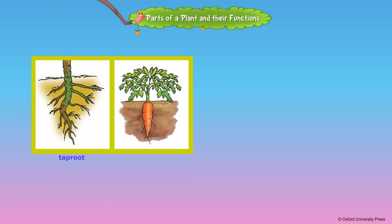A long main root grows at the end of the stem, which is known as taproot. A taproot has many sub-roots which grow from its sides. Carrot is a modified form of a taproot, which is edible.